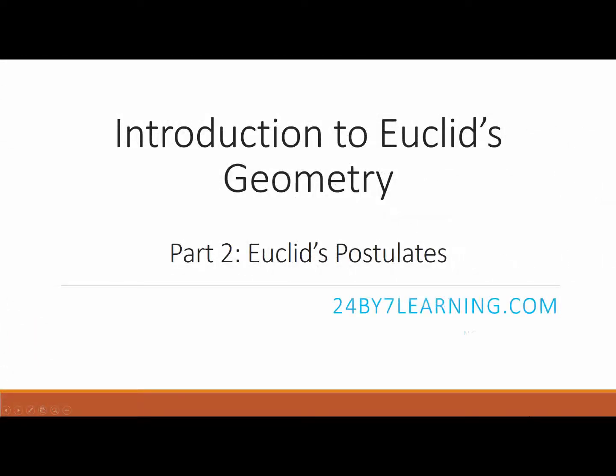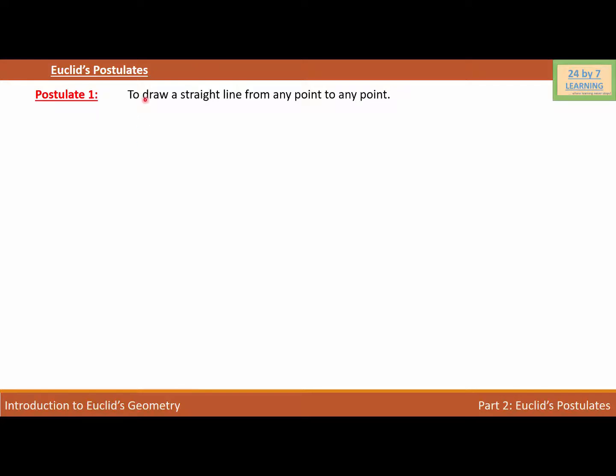Hi there. In our last section, you learned about Euclid's definitions. In this section, you're going to learn about Euclid's postulates. So let's begin. Postulate 1: To draw a straight line from any point to any point. Postulate 2: To produce a finite straight line continuously in a straight line.